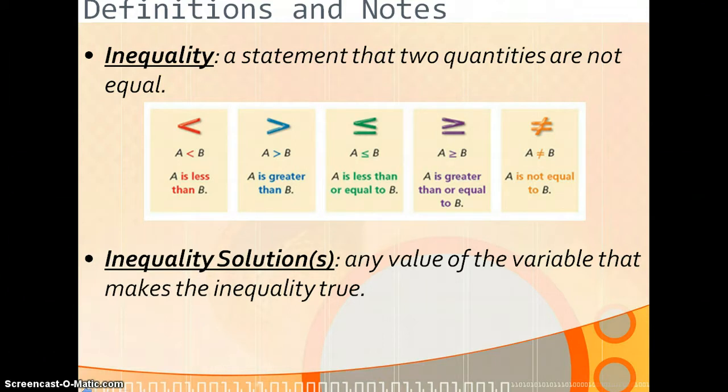Next, inequality solution or solutions. Any value of the variable that makes the inequality true. So if you have A is less than B, and you were to solve it out, and you can have something like A is less than 9, you would want every number smaller than 9: 8, 7, 6, 5, 4, all the way down into your negatives.